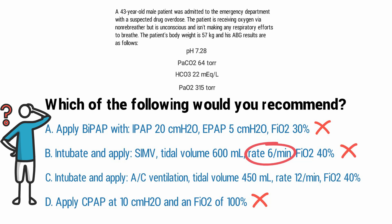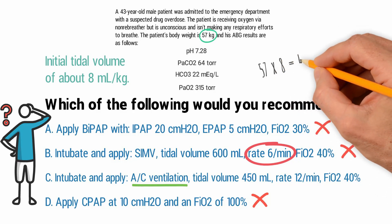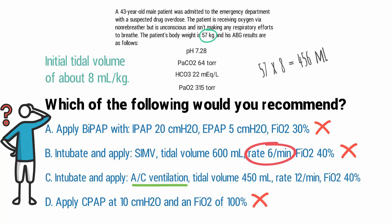So we can rule SIMV out as well. The best option is assist control ventilation at a normal rate with an initial tidal volume of about 8 milliliters per kilogram of body weight. The patient's body weight is 57 kilograms, so 57 multiplied by 8 gives us 456 milliliters — close to the tidal volume in the answer choice, confirming it's appropriate. Regarding FiO2, the patient has a PaO2 of 315 torr from the non-rebreather, which is way too high. We need to decrease that amount, and an FiO2 of 40% is a good starting point to monitor and reassess.